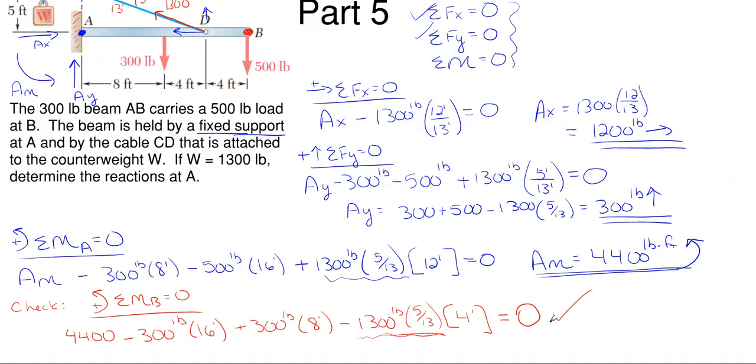What does this come out to be? It comes out to be exactly zero, so that means that my reactions are correct. There's always a way to check your reaction answers, and it's always wise to do so. Just sum moments at a different point that you summed at to find the reactions, and everything should check out. Sometimes it may not be exactly zero. Sometimes it may be like zero point something. It just depends on how large your reaction values are, but this one just happens to come out to be exactly zero, which is a good thing.